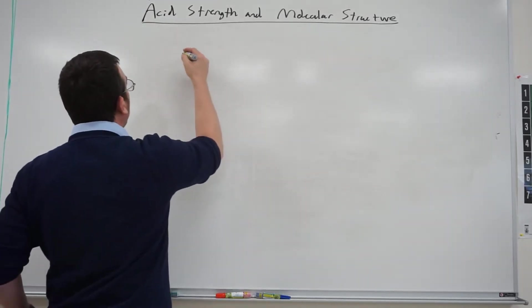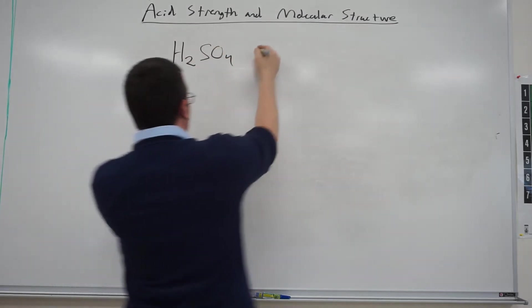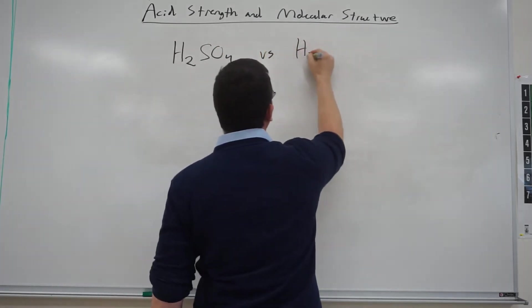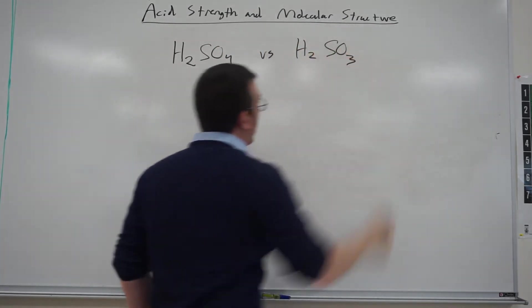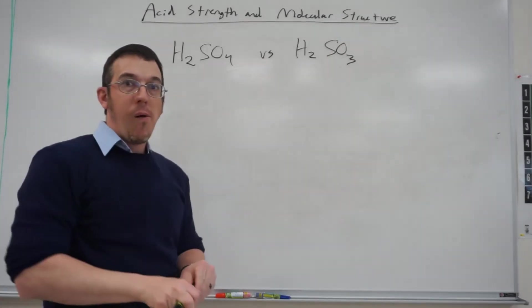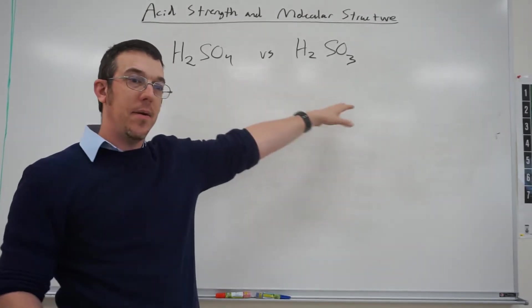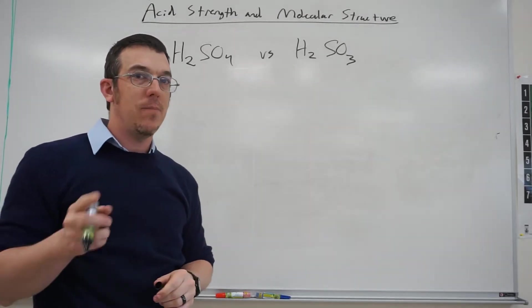So let's look at two different examples. Let's say we have H2SO4 and we're going to compare that with H2SO3. So what's the difference between those two? Well we know that one has one more oxygen than the other, so the question is how does that make a difference?